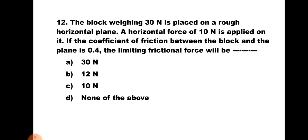Question number twelve: A block weighing 30 N is placed on a rough horizontal plane. A horizontal force of 10 N is applied on it. If the coefficient of friction is 0.4, the limiting frictional force will be — a) 10 N, b) 12 N, c) other options. Normal reaction R = W = 30 N, μ = 0.4. Limiting frictional force = μR = 0.4 × 30 = 12 N. Hence the correct answer is b) 12 N.